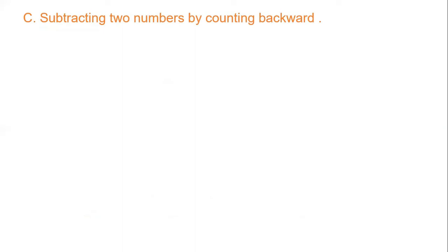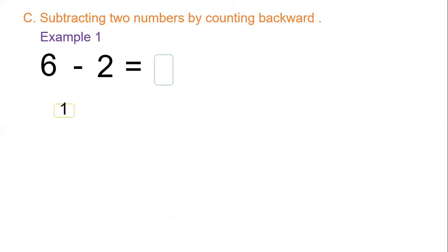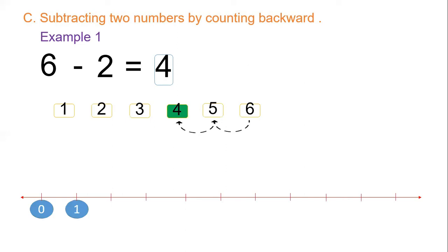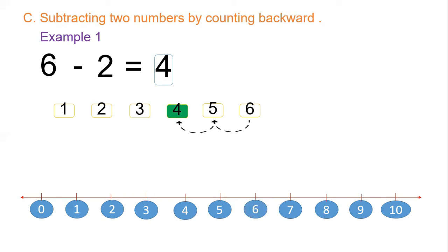Now let us subtract by counting back. We have six minus two, so let's write from one up to six: one, two, three, four, five, six. Now we will go backwards two steps from six: one, two — where we stop is our answer, so our answer is four. Six minus two equals four. We can also show this on a number line from zero up to ten — start at six, go backwards two steps, and our answer will be four.